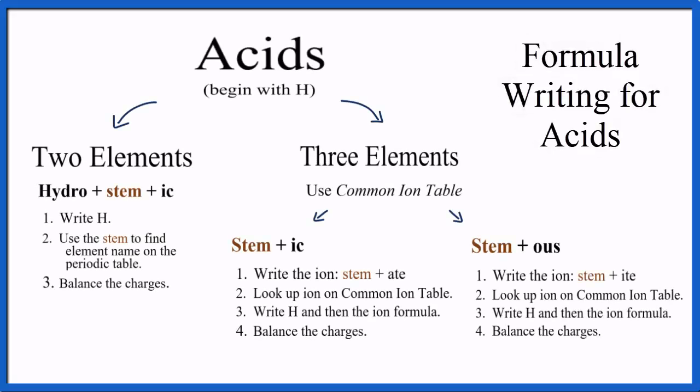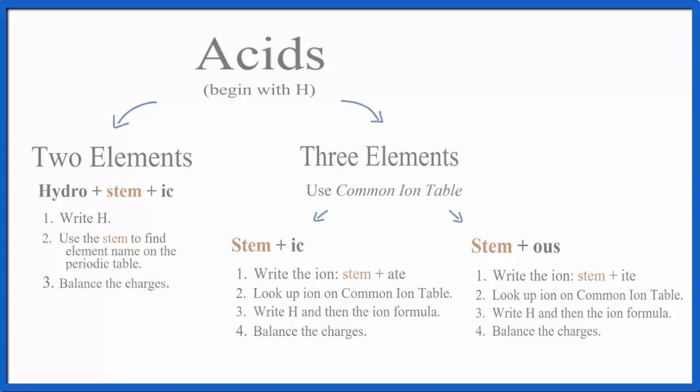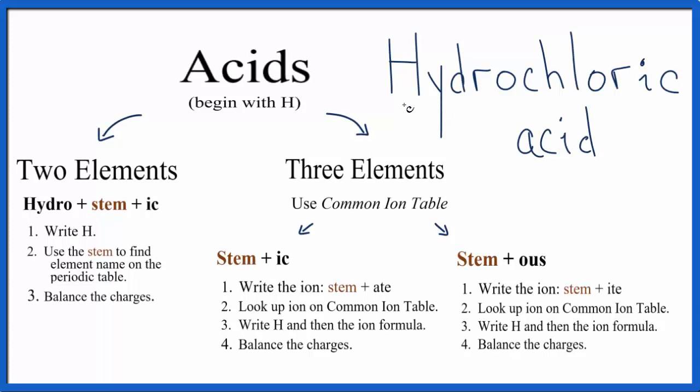To write the chemical formula for an acid when you're given its name, we follow just a few basic rules. It's sort of the reverse to writing the name when you're given the formula. We'll start with hydrochloric acid, something you probably know is HCl. We can see that hydrochloric acid begins with the prefix hydro and that the only rule that begins with hydro is right here.